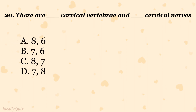There are how many cervical vertebrae and cervical nerves? A. 8 and 6, B. 7 and 6, C. 8 and 7, D. 7 and 8. The correct answer is D. 7 vertebrae and 8 nerves.